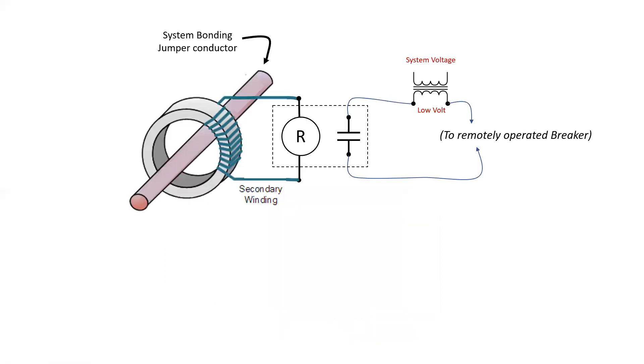A few different slides here that just show the process of what happens. So here's the system bonding jumper. That's the relay with the coil and the contacts. And then we have to have some form of a source in order to operate the remotely operated breaker or the shunt trip mechanism.